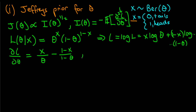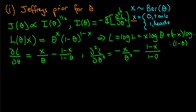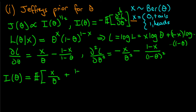Differentiating again to get the second derivative, which we need for the information matrix, we get minus x over theta squared minus one minus x over one minus theta squared. To get the information matrix, we multiply the second derivative of the log likelihood by minus one and take the expectation, giving us the expected value of x over theta squared plus one minus x over one minus theta squared.